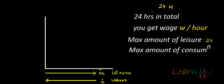With this maximum income of 24W, you can consume some amount of goods, so 24W is the maximum amount of income or consumption you can have. At this point of 24W on the consumption axis, you are working for 24 hours with zero leisure. Since labor is increasing in that direction, joining these two points — 24 on the leisure axis and 24W on the consumption axis — gives you the budget line.